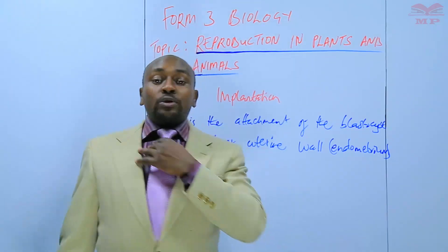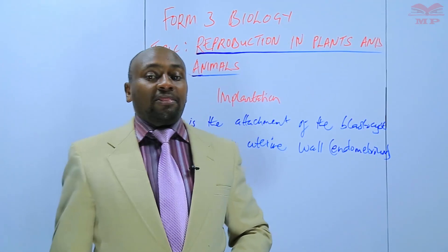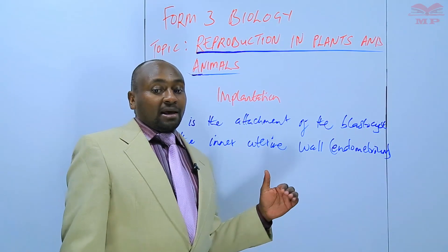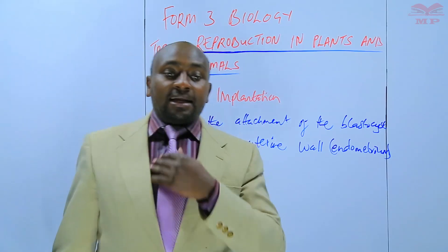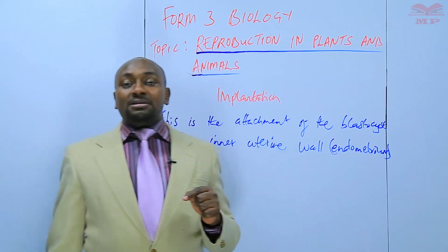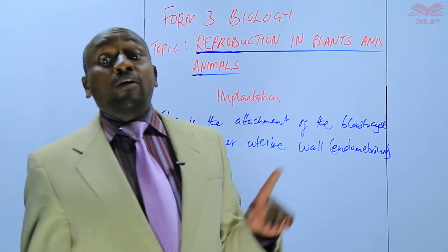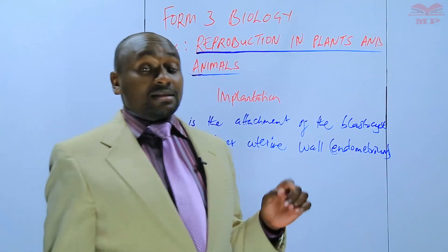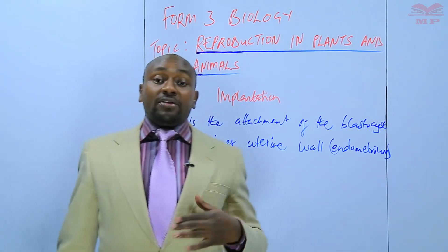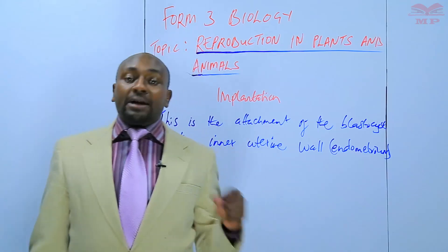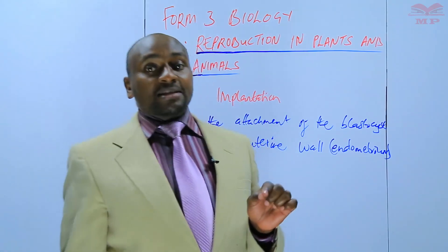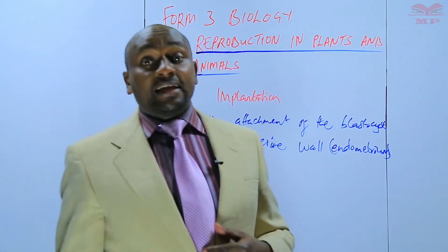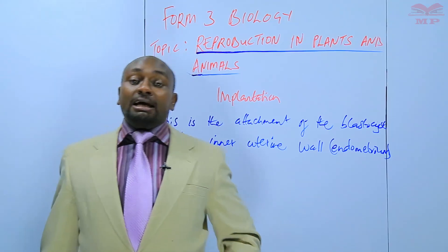It is not always the case that the blastocyst is implanted within the uterus. Sometimes the blastocyst becomes implanted within the oviduct. If that happens, we get what we call ectopic pregnancy, which is very, very dangerous. If it is not corrected early enough, it can be fatal or it can cause death.